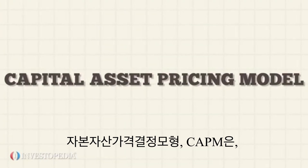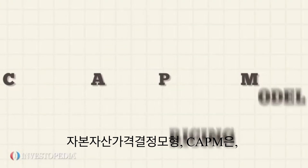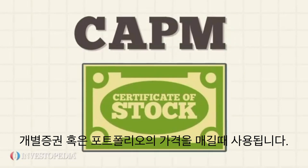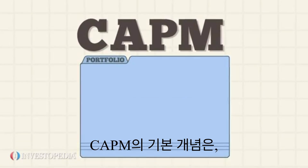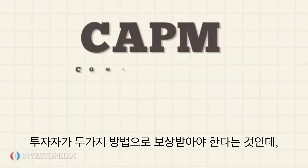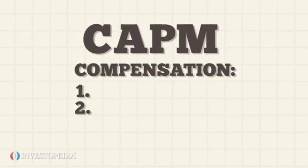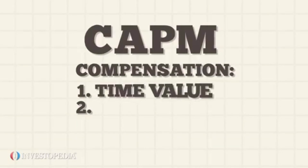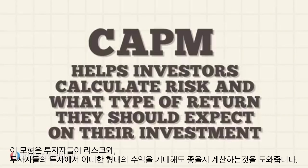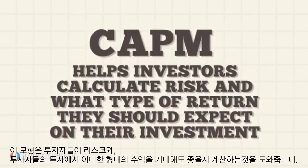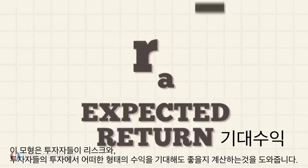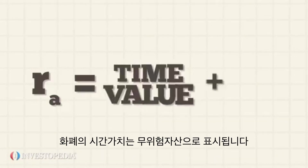The Capital Asset Pricing Model, or CAPM, is used to price an individual security or portfolio. The general idea behind CAPM is that investors should be compensated in two ways: for the time value of their money and risk incurred. The model helps investors calculate risks and what type of return they should expect on their investment.